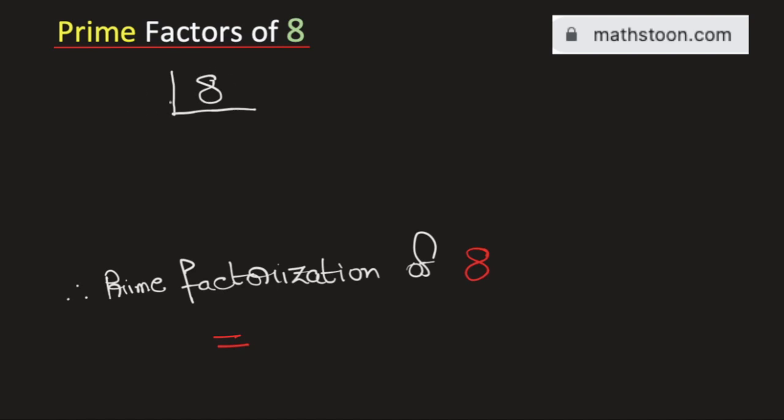See that 8 is an even number, so it will be divisible by 2. By doing so, we get 4 here.